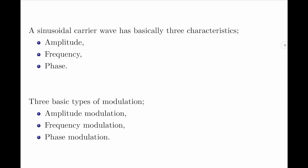Let us continue our discussion by considering a simple sinusoidal carrier that has basically three characteristics: amplitude, frequency, and phase. Based upon these characteristics of the carrier wave, we obtain three basic types of modulation, which are named as amplitude modulation, frequency modulation, and phase modulation.